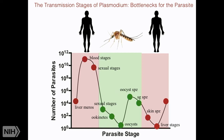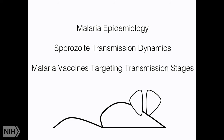My talk will be divided into three parts. I'm going to do a little primer on malaria epidemiology so we can understand the transmission map and address whether malaria might come back to the United States. Then I will talk about sporozoite transmission dynamics. And then I'm going to end with malaria vaccines targeting the transmission stages. I have a picture of a mouse because mice have their own malaria parasites that we take advantage of — a lot of very important work has been done with the mouse malaria model.